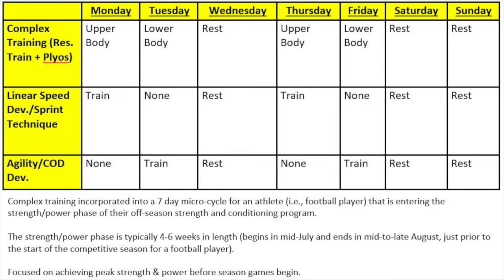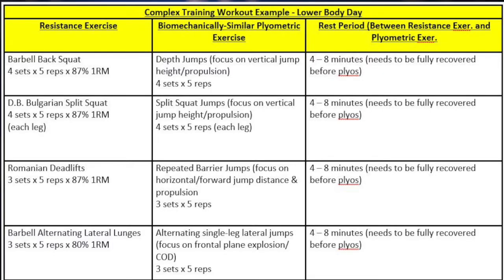Wednesday is a rest day — we don't want overtraining to set in. Thursday repeats Monday's workout: upper body complex training and speed development, with no agility or change of direction work. Friday is basically a repeat of Tuesday: lower body complex training, no speed development, but agility and change of direction training is included. Then on the weekend, the athlete gets to rest and recover.